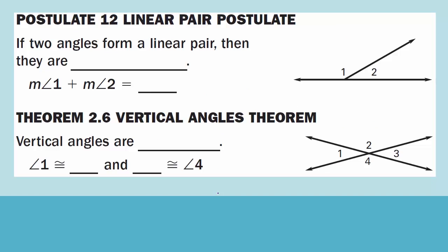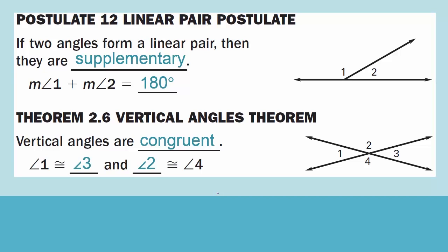Postulate 12: Linear Pair Postulate. If two angles form a linear pair, then they are supplementary — the measure of angle 1 plus the measure of angle 2 equals 180 degrees. Vertical Angles Theorem: vertical angles are congruent. Angle 1 is congruent to angle 3, and angle 2 is congruent to angle 4. You can tell which angles are congruent by the number of arcs between them — one arc means congruent, two arcs means congruent.